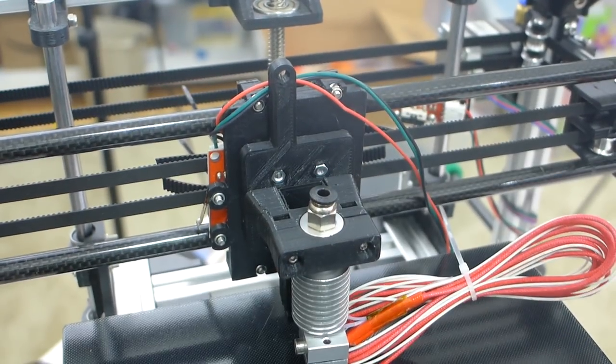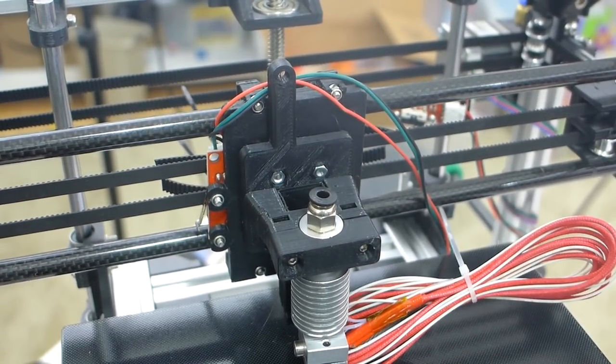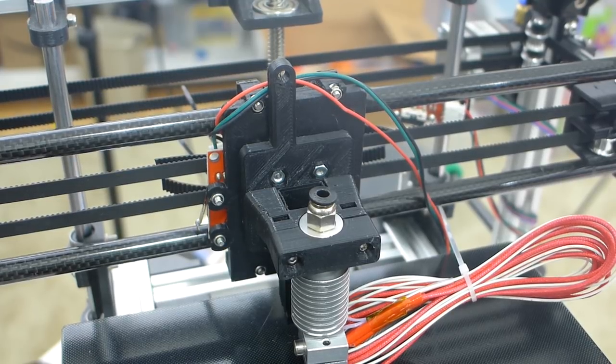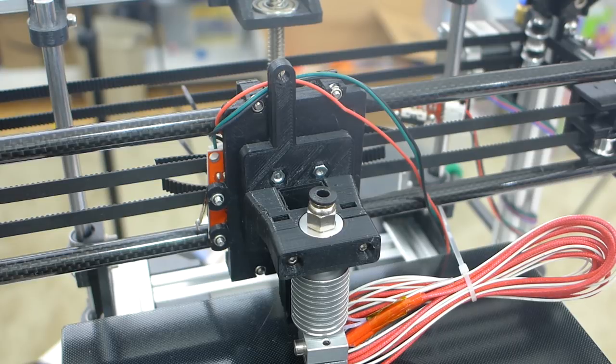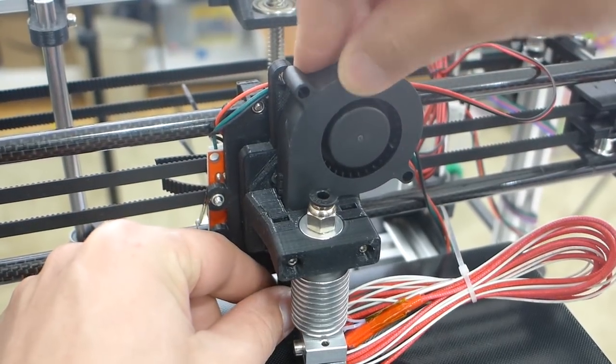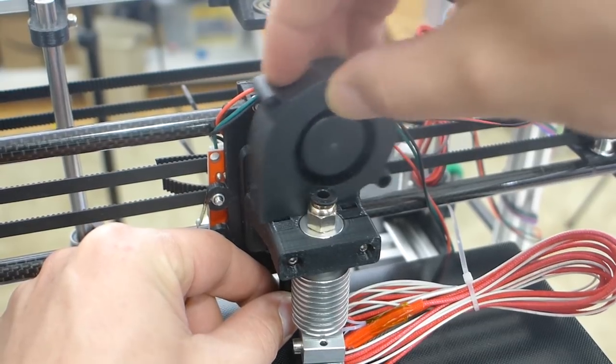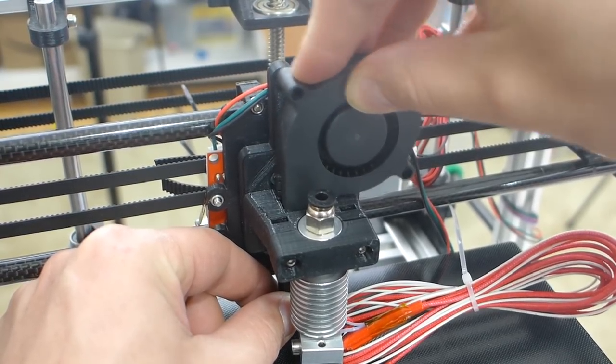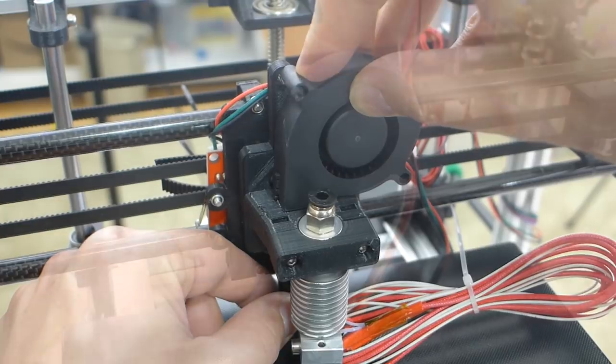So the easiest thing to do right now is actually get the hot end in there. So we're going to go ahead and take out these two screws and mount the hot end. That is nice and tight in there now. And then the part cooling fan is also super easy, and it just bolts right onto the top there. So it just literally just sits on here and gets mounted there.